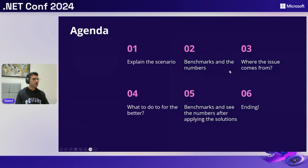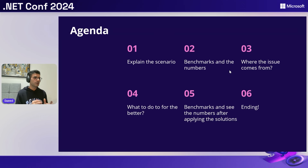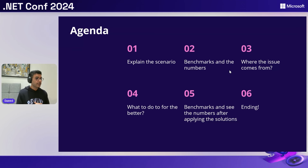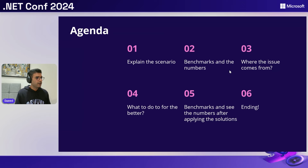Here is the agenda for today. We are going to start by explaining the scenario — what is exactly happening with the async APIs in EF Core. After that, we'll look at the benchmark results, go through the issue and where it comes from, talk about solutions, run the benchmark again with updated numbers, and finish with a conclusion.